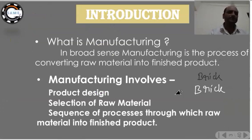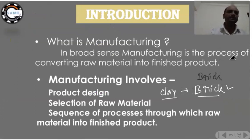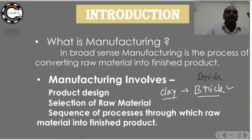Clay is the raw material, and the brick is the finished product. That is what manufacturing is. In broad sense, manufacturing is the process of converting raw material into finished product. Manufacturing involves three important steps.